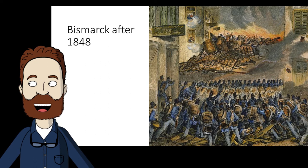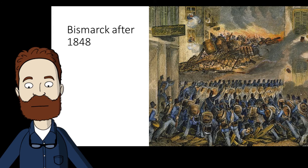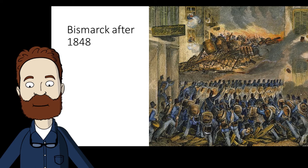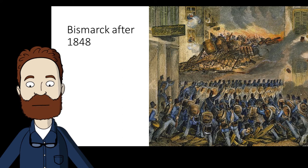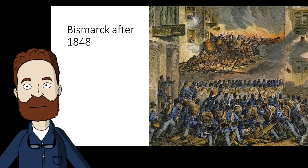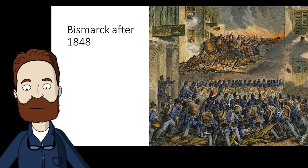From 1851 to 1862, Bismarck served in a series of ambassadorships at the German Confederation in Frankfurt, in St. Petersburg, Russia, and in Paris. This experience gave him insight into the vulnerabilities of Europe's great powers. When William I became Prussia's king in 1861, he appointed Bismarck as his chief minister. Though technically deferring to William, in reality Bismarck was in charge, manipulating the king with his intellect and the occasional tantrum while using royal decrees to circumvent the power of elected officials.